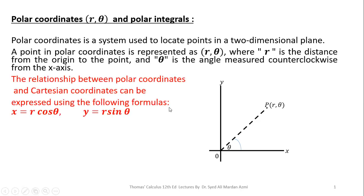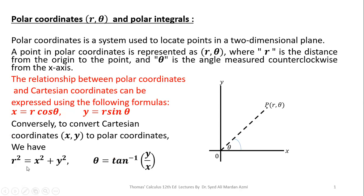These are the transformation equations in order to convert Cartesian coordinates into polar coordinates: x is equal to R cos theta and y is equal to R sin theta. For the reverse process, we have R squared is equal to x squared plus y squared, and theta is equal to inverse tangent of y over x.